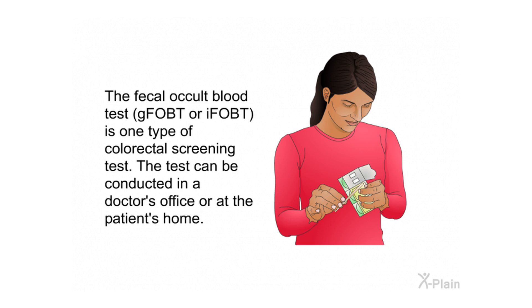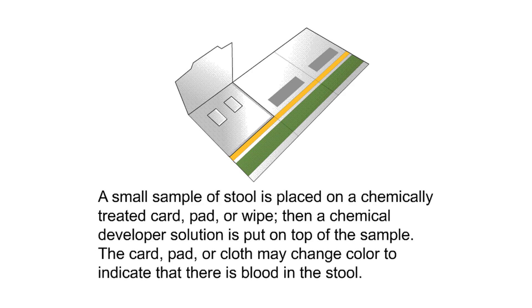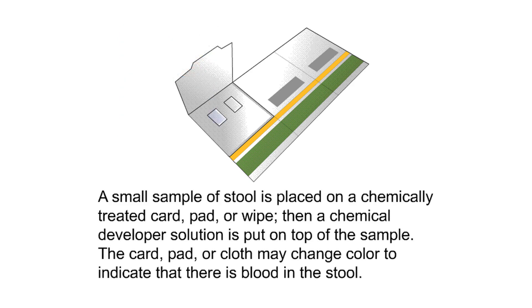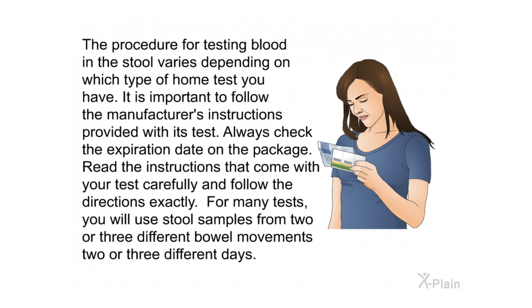How It Is Done. The fecal occult blood test — G-FOBT or I-FOBT — is one type of colorectal screening test. The test can be conducted in a doctor's office or at the patient's home. A small sample of stool is placed on a chemically treated card, pad, or wipe. Then a chemical developer solution is put on top of the sample. The card, pad, or cloth may change color to indicate that there is blood in the stool.